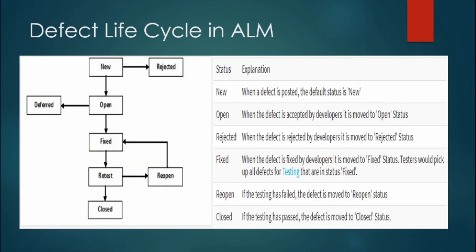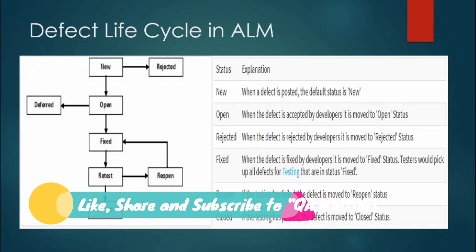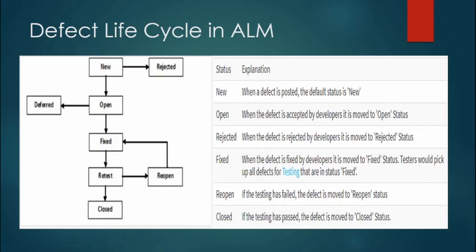I have already created videos on requirement specification, test planning, and test execution. Today we are covering the defect tracking part. Let's revise the defect life cycle. I have also created a video on the bug life cycle, and I'll post the link in the description. When a defect is posted, the default status is 'New'. When the developer accepts it, it moves to 'Open' status.